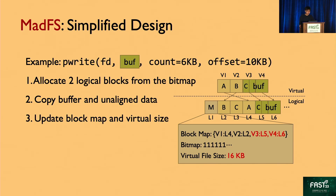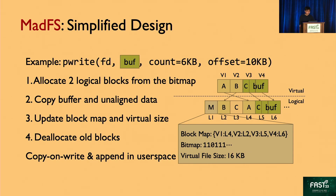We then update the block map. Virtual block V3 is now mapped to logical block L5, and we added a new entry to map V4 to L6. We also need to update the virtual file size. The application can now see this newly updated data. Finally, we deallocate the old blocks. In this example, copy-on-write and append are both data operations that require metadata updates. With metadata embedding, we can do them efficiently in user space without the kernel updating the inode or changing the page table.